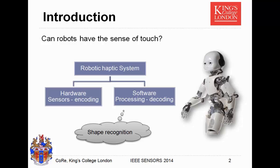For a robotic haptic system, we divide it into two parts. The first is the hardware — we use the tactile sensor to encode the information from outside. The second is the software. We want to process this information from outside. Our research is focusing on the software to process the information. One of the most important applications is to recognize shapes of objects — that's our topic.